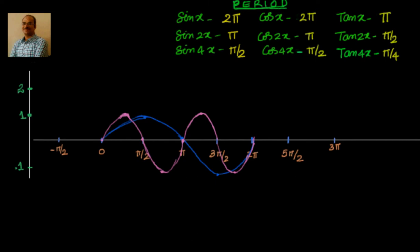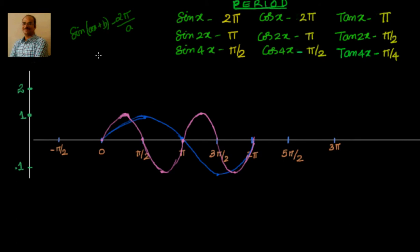Welcome! In the last video we learned about the period — what happens to the period if the angle becomes a multiple or sub-multiple. By multiple I mean x becomes 2x or 4x; sub-multiple means x becomes x/2 or x/4. The simple formula for the period is 2π/a, for example the period of sin(ax + b) is 2π/a. The coefficient of the trigonometric function and the period at 1x are inversely proportional.